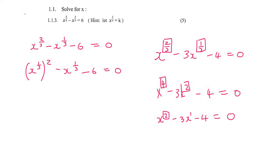And then we can say minus x^(1/3) - 6 = 0. Then we can use their little suggestion, which is to let x^(1/3) equal to k. So let x^(1/3) = k. And so then we get k^2 - k - 6, and now that is an easy trinomial.